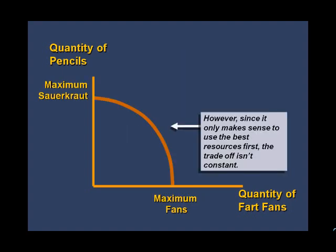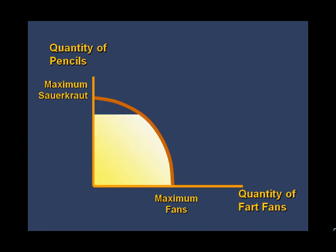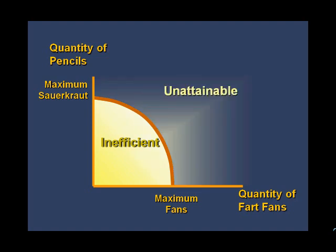However, the trade-off is not constant. Because people tend to use the best suited resources first, we will encounter diminishing returns as production increases. Our choices can be divided into three categories. Combinations below the curve are possible but would be inefficient — we have enough resources to produce more. Since we face limited resources and technology is fixed in the short term, certain combinations are beyond our reach and are unattainable. Only those combinations that lie on the curve are both attainable and represent efficient use of resources.